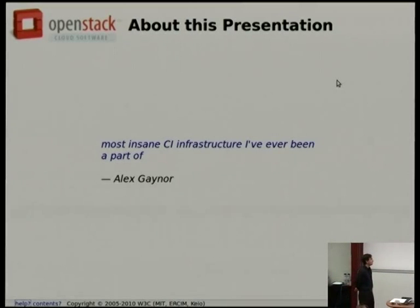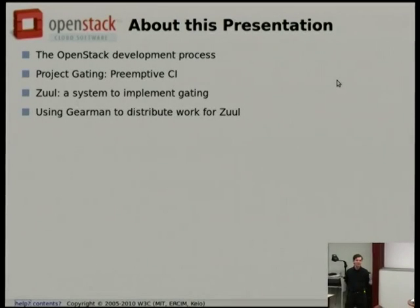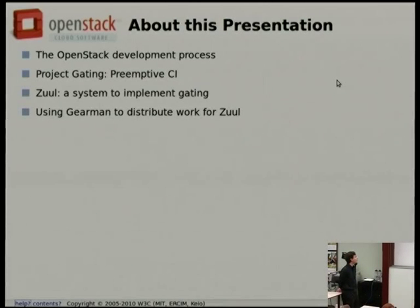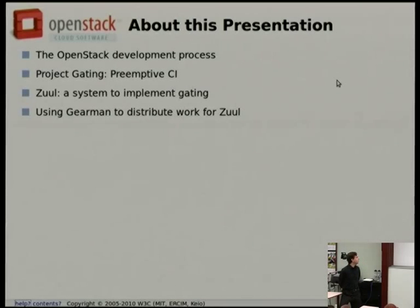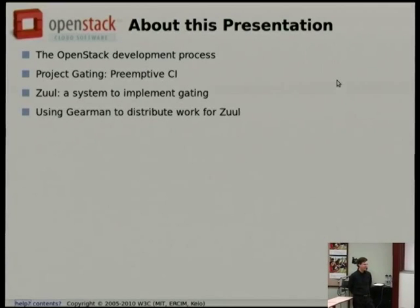This is the continuous integration infrastructure for the OpenStack project. This is not a talk about OpenStack — there were quite a few of those already at this conference. What it is is a little bit about our development process, giving you background about what we're doing and why. It's about a process that we call project gating, which is like continuous integration but done backwards, and specifically about a program called Zuul which we use to actually accomplish that.